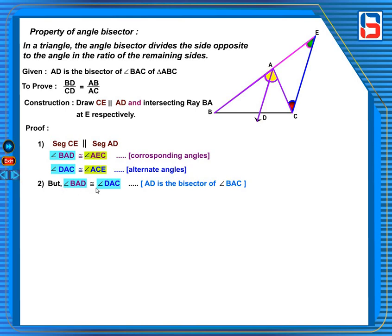Now, BAD is congruent to DAC, therefore AEC is congruent to ACE. From 1 and 2, in triangle AEC, angle E is congruent to ACE from 1 and 2.